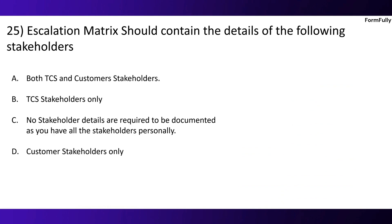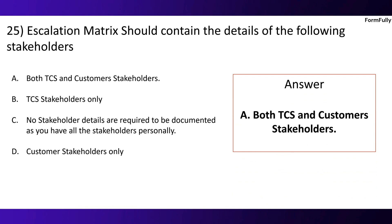Question 25. An escalation matrix should contain the details of the following stakeholders. Option A: Both TCS and customer stakeholders. Option B: TCS stakeholders only. Option C: No stakeholder details are required to be documented as you have all the stakeholders personally. Option D: Customer stakeholders only. The correct option is A, both TCS and customer stakeholders.